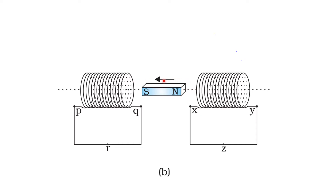In this case, first we have to see the arrow mark. The arrow mark direction is on the left side, so the south pole of the bar magnet is moving towards this coil. According to Lenz's law, the same pole has to be produced here. So, south pole is produced, and on the other side north pole will be produced. If it is south pole, the direction of the induced current is clockwise direction.